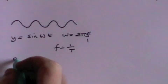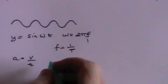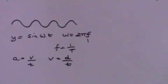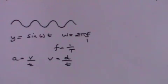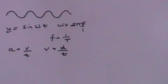Acceleration is the rate of change of velocity with time, and velocity is the rate of change of distance with time. To find the acceleration of a particle travelling along a sine wave, we need to differentiate twice with respect to time. y equals sine omega t. dy by dt is the velocity, and that equals omega cosine omega t.